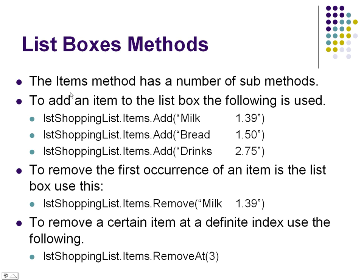Here are some examples of list box methods. If we wanted to add something to a list box, we would say the name of the list box again, and then we'd say items, and then we'd say add. If we want to add something, we put in parentheses the item we want to add. This whole thing's added to the list box then.